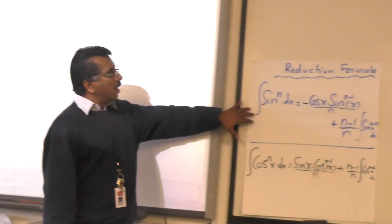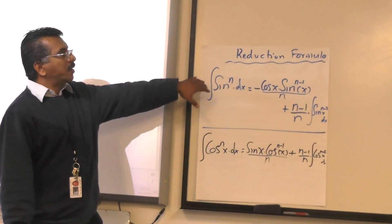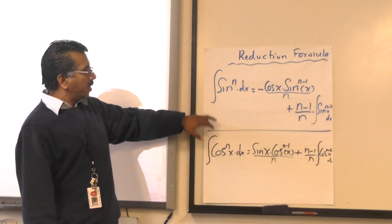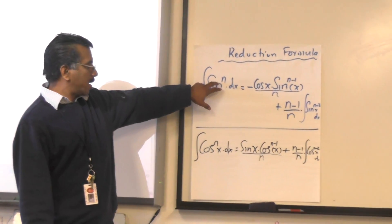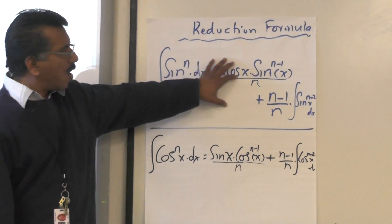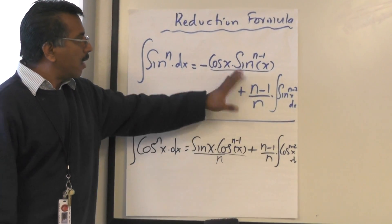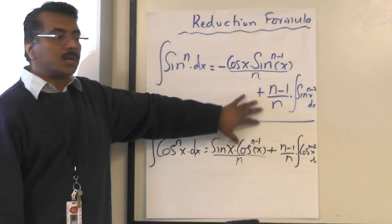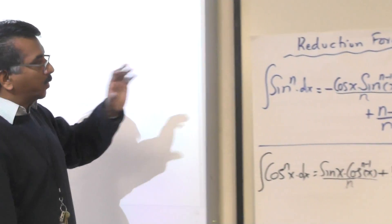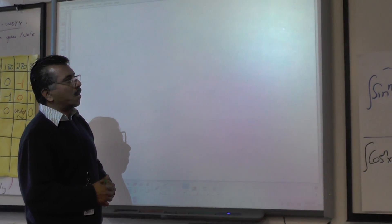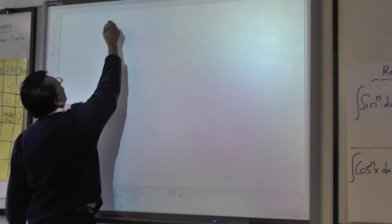Today we'll see how the reduction formulas could be used. The two important formulas are the integral of sinⁿ and integral of cosⁿ. Even though the formulas look a little messy and difficult, it's better to know how they work. To understand these formulas, let's first use another formula called integration by parts.